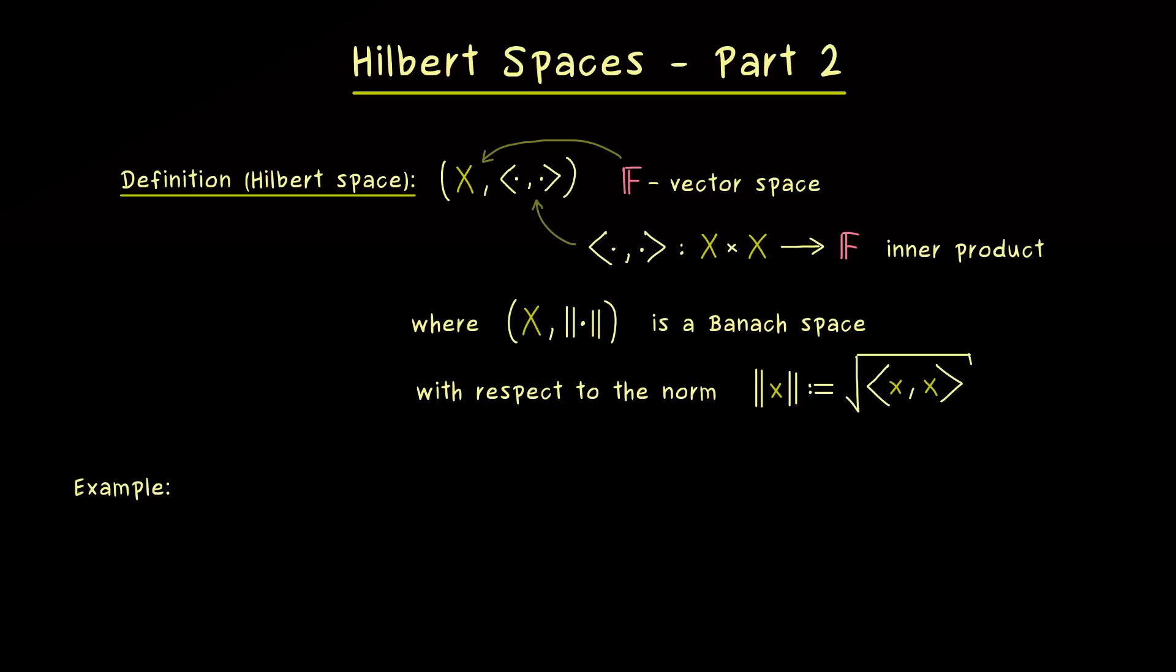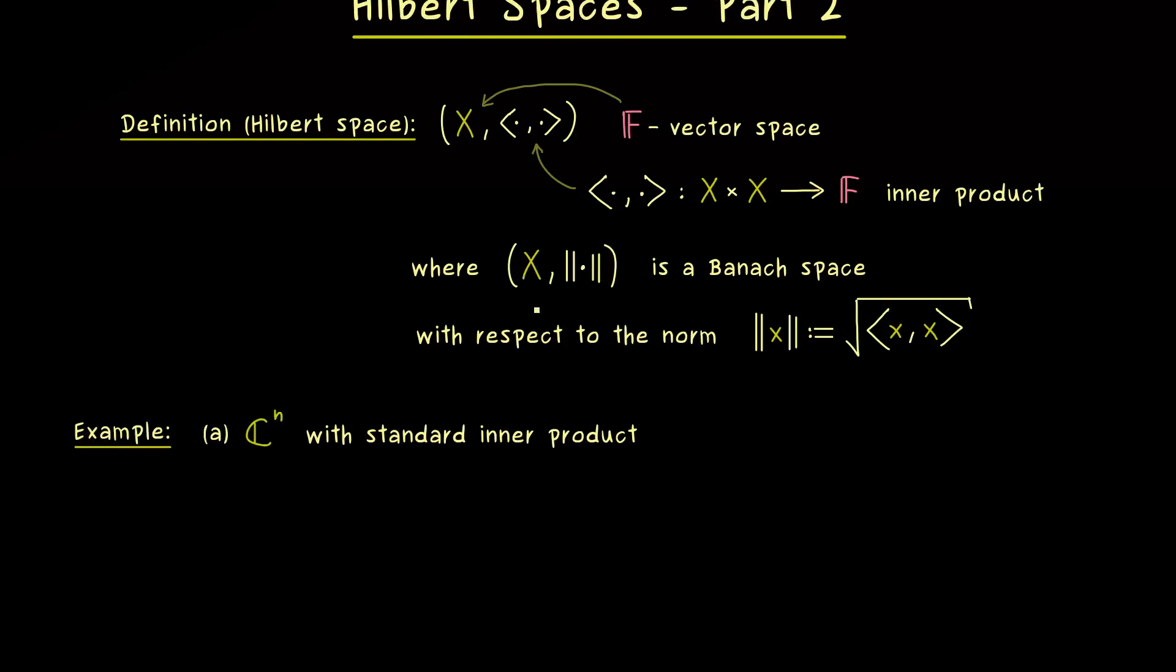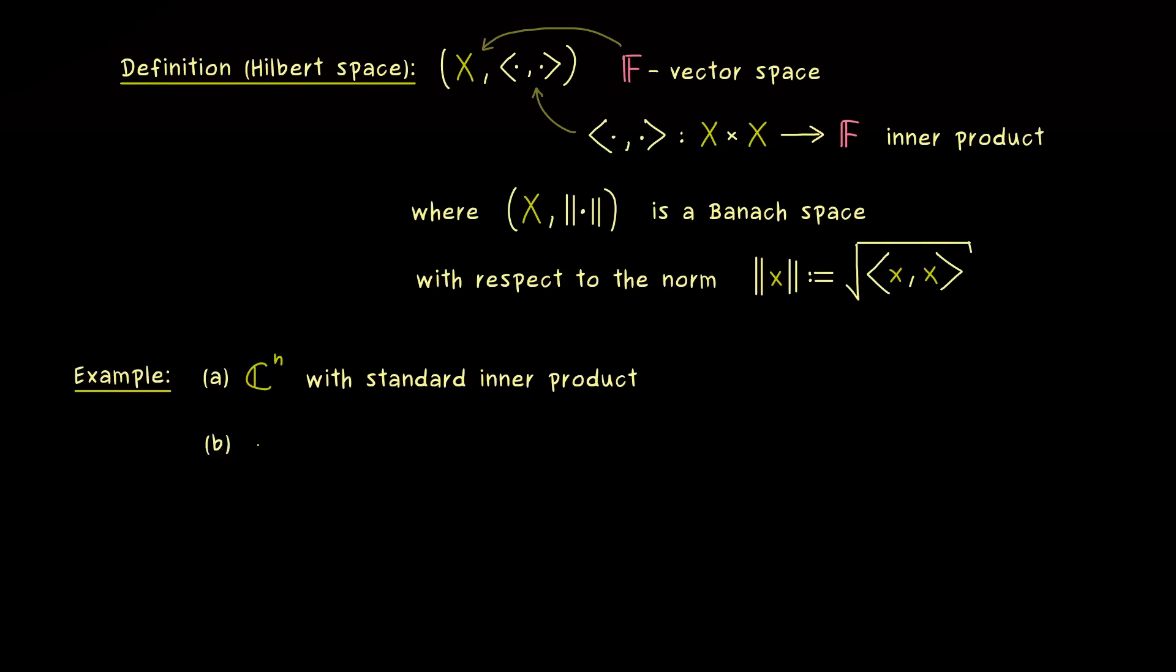And therefore, it's not a problem at all to write down some important examples. The first one we really know from linear algebra, namely it's C^n. And usually the inner product we have on it is the standard inner product. But now if you know some linear algebra, you also know some other inner products. And indeed, we also get a Hilbert space with respect to these other inner products. In other words, on R^n and on C^n, we can just fix an inner product and we get a Hilbert space.